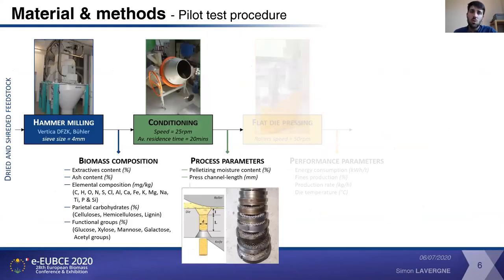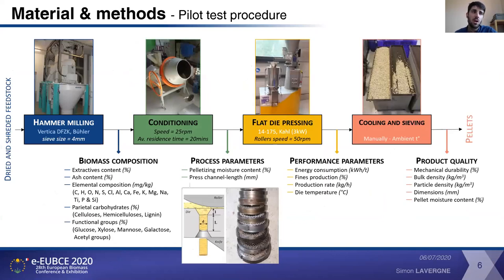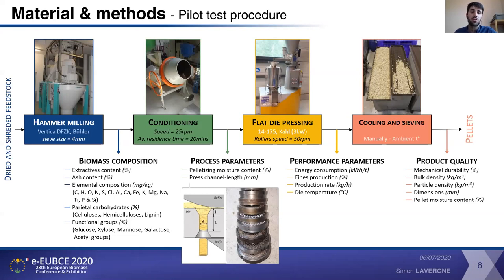We pelletized all these materials using the same methods. We first analyzed every feedstock regarding extractive content, ash content, as well as the elemental composition, and what was very important for us, the parietal carbohydrates — so lignin, cellulose, and hemicellulose. During the pelletizing, we used the flat die pelletizer. We can't use the same pelletizing moisture content and press channel length for all material, so what was planned was to adjust these two very important parameters in order to obtain the highest mechanical durability for the pellets.